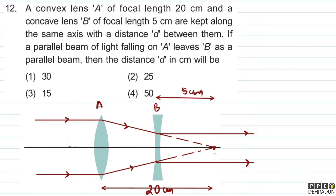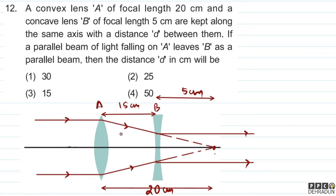So the distance between the two lenses is 20 cm minus 5 cm, that is 15 cm. So which option will be the correct answer for this question?